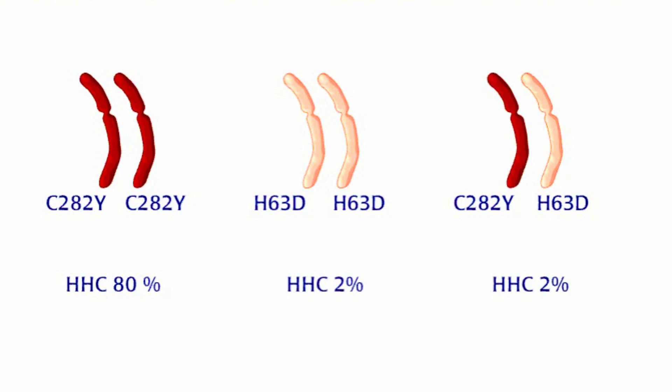Why some people with H63D genes develop hemochromatosis and why some don't is still unknown. But some genetic differences and environmental differences may be at work. Finally, there are still some versions of the gene and possibly completely other genes that can cause hemochromatosis that have not been deciphered.